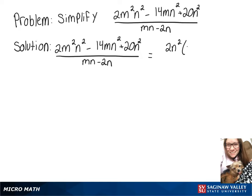We need to factor the top and the bottom. On top we can factor out 2n² which leaves m² - 7m + 10. On bottom we can factor out n leaving m - 2.